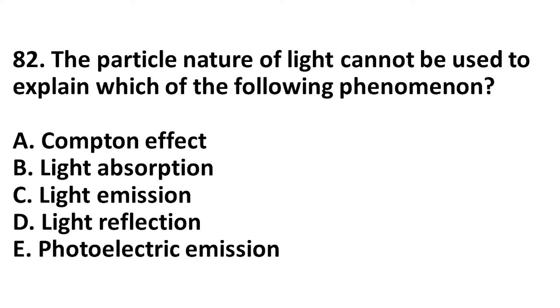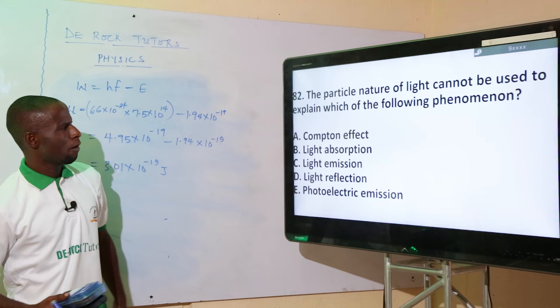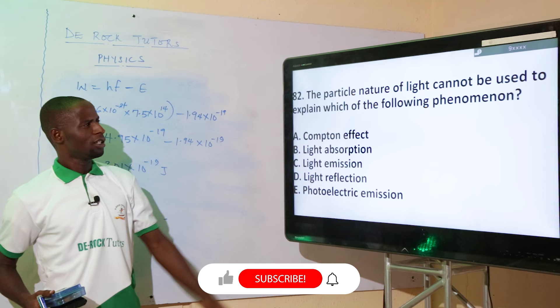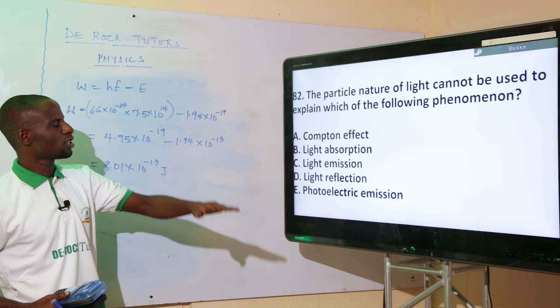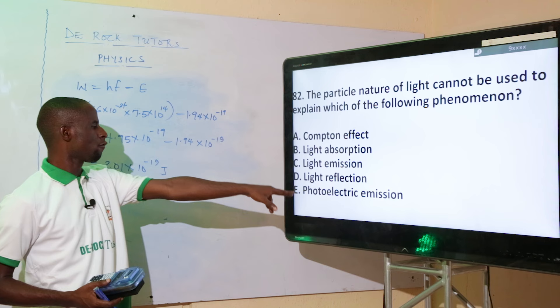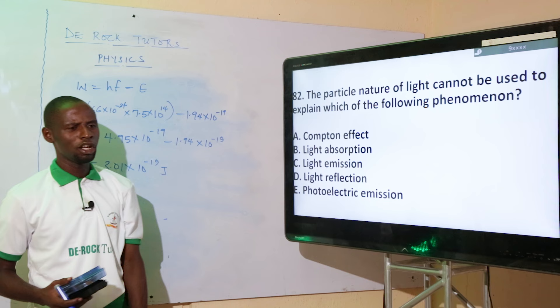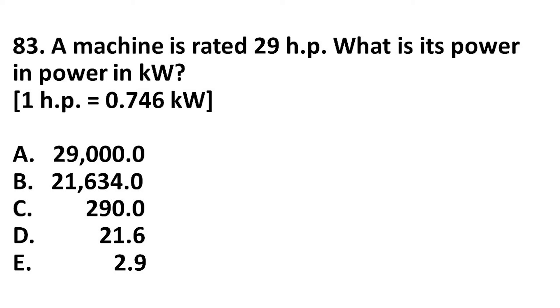The particle nature of light cannot be used to explain which of the following phenomena? Light has wave-particle duality — it can behave as a wave and as a particle. Considering particle nature: the photoelectric effect, light absorption, and light emission are all particle nature phenomena. The phenomenon that cannot be explained by particle nature is option D, which is a wave nature phenomenon of light.